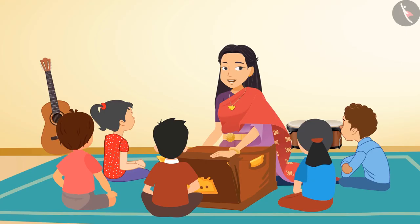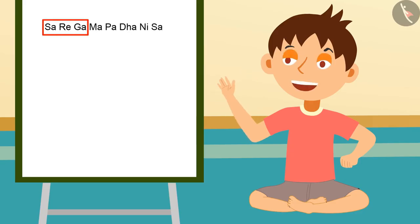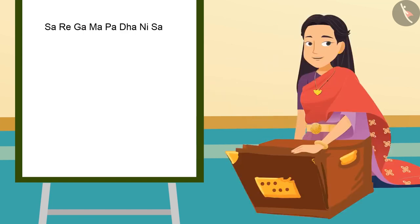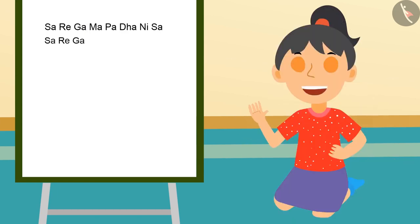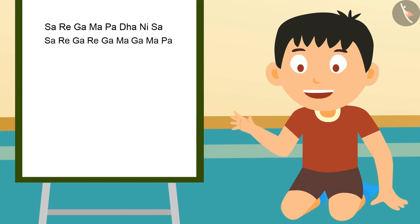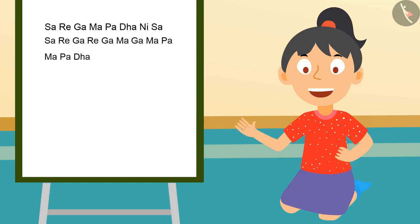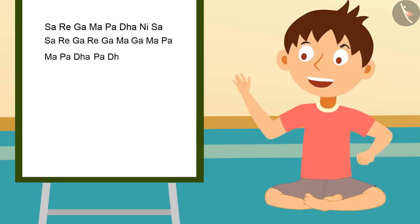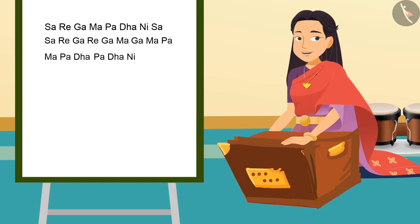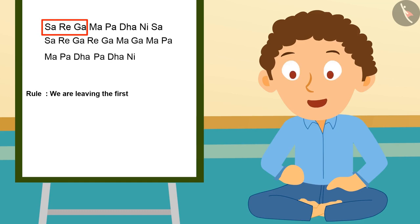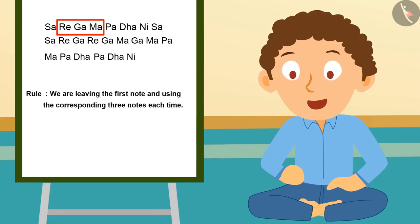Come, let us all sing this together. Now let's make a new pattern. Can we take three notes together? Yes! If we take three notes together like Sa, Re, Ga — then what comes after? Re, Ga, Ma. Then Ga, Ma, Pa. Then Ma, Pa, Dha. Then Pa, Dha, Ni. Very good! So what is the rule of this pattern? We are leaving the first note and using the corresponding three notes each time.